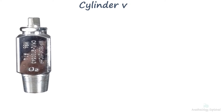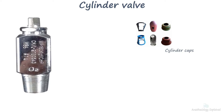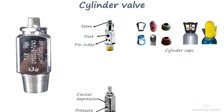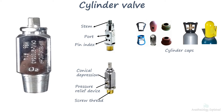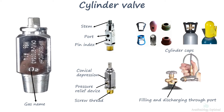The valve is made of bronze or brass and is the most fragile part of the cylinder, therefore provided with a metal protection cap to protect it. It has a port, stem, pressure relief devices, pin index safety system, conical depression, and screw thread. The chemical formula of the particular gas is engraved on the valve. Cylinders are filled and discharged through the valve, and the end of the valve is threaded to fit into the corresponding thread of the cylinder neck.